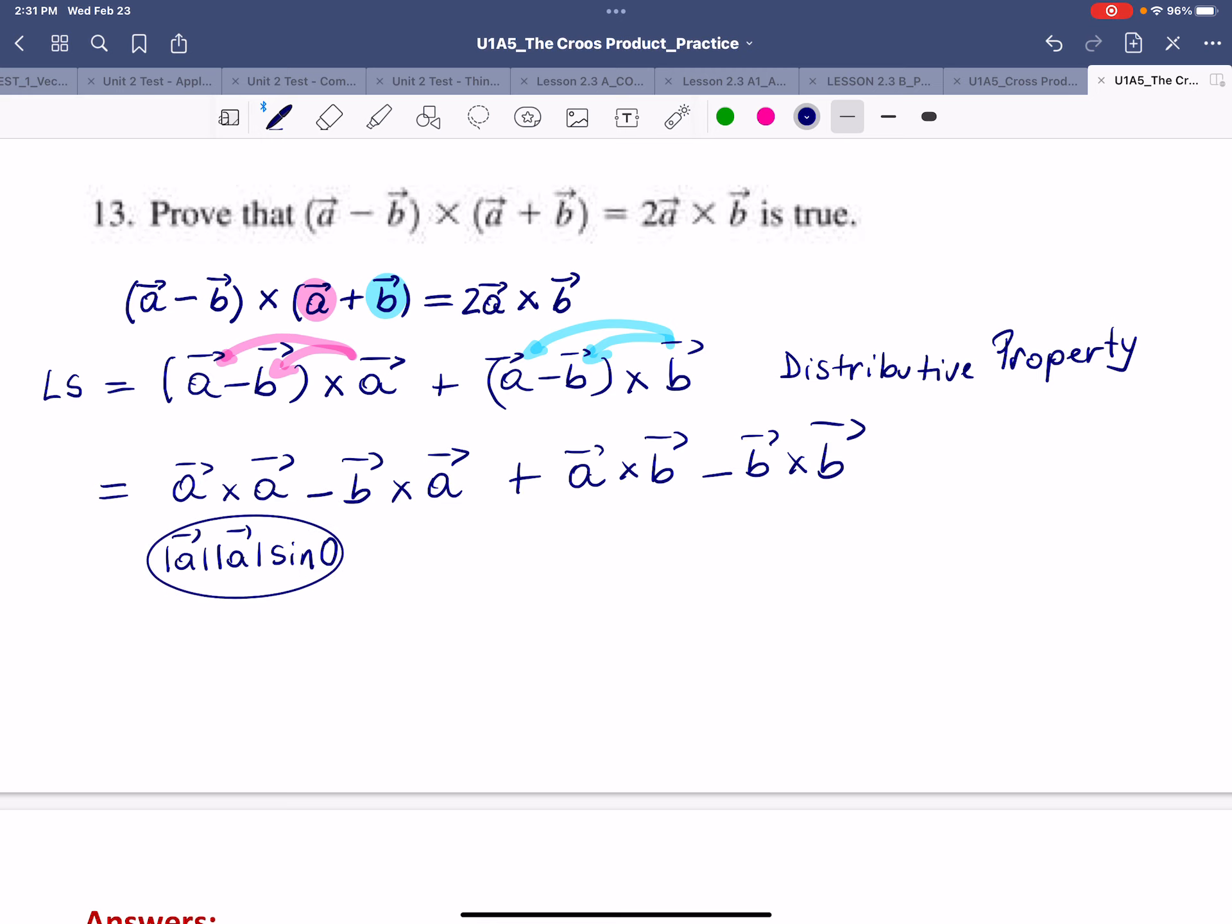So we're going to say the same thing for the last term in here, B cross B, which will be the magnitude of B times magnitude of B times the sine of angle 0, because any vector makes an angle 0 with itself. So here we go. We have another term which equals 0.